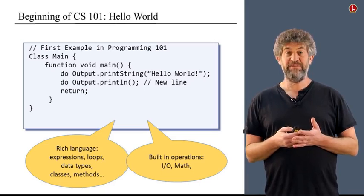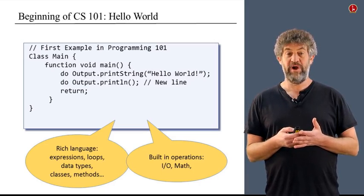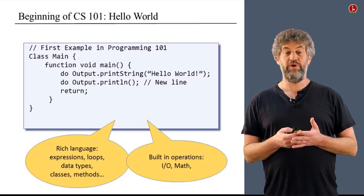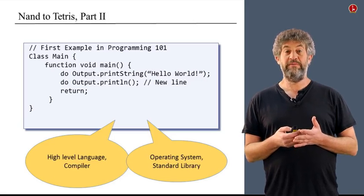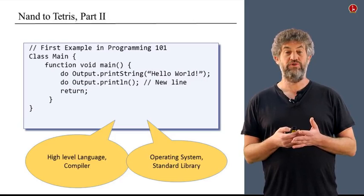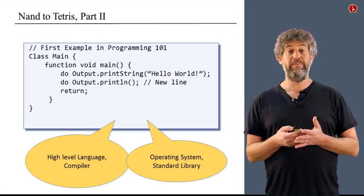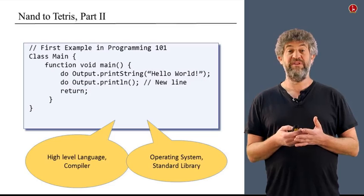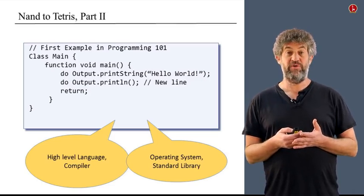And in fact, in the second part of the course where we deal with the software hierarchy, this is exactly what we're going to implement. We're going to present a high level language called Jack, and we're going to write a compiler for it, using several layers of abstraction, of course, because that's a complicated thing, building a compiler.